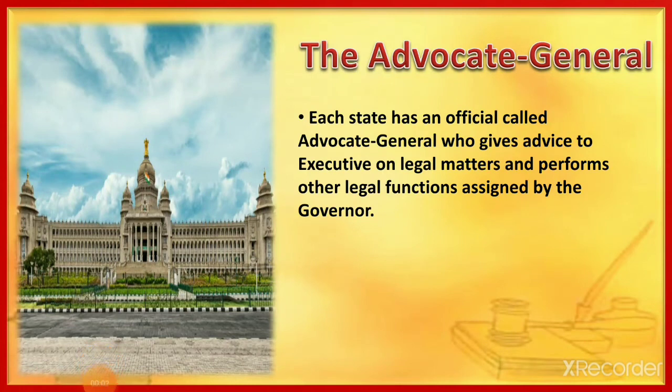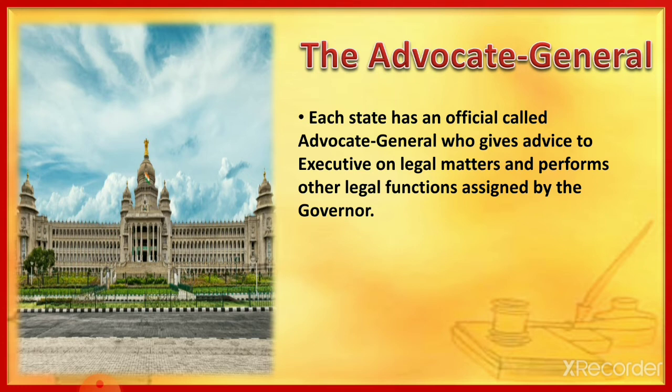Each State has an official called the Advocate General, who gives legal advice to the executives and performs other legal functions assigned by the Governor. He or she is appointed by the Governor and holds office during the pleasure of the Governor. Only a person qualified to be a High Court Judge is eligible for the post. The Advocate General can take part in the proceedings of the State Legislature but does not have the right to vote.